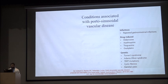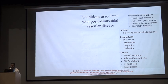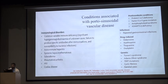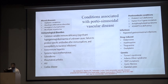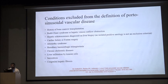Conditions associated with PSVD include infections — repeated GI infections leading to portal pyemia and thrombophlebitis. Drug-induced causes include ARVs; HIV drugs have been documented to cause PSVD. Genetic causes include prothrombotic conditions such as protein C and S deficiency, factor 2 mutation, antiphospholipid syndrome, and ADAMTS13 deficiency. Immunological causes include CVID, the most common immunological precipitant. Blood disorders such as aplastic anemia and myeloproliferative disorders are also associated. Conditions excluded from PSVD include bone marrow transplantation, Budd-Chiari syndrome, hepatic schistosomiasis, cardiac failure, hereditary hemorrhagic telangiectasia, chronic cholestatic disease, and sarcoidosis.